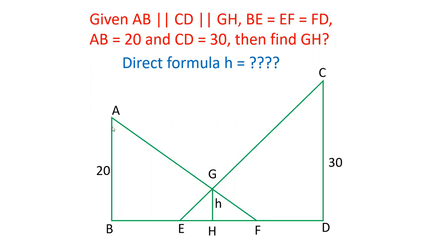For this question, we have three parallel lines: AB, GH, and CD. The base is trisected where BE equals EF equals FD. Points are joined to form triangles. I have to find what the height is going to be.